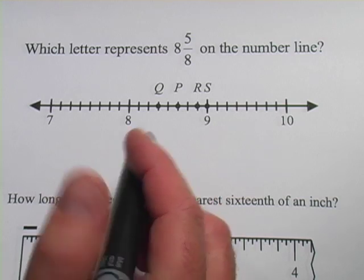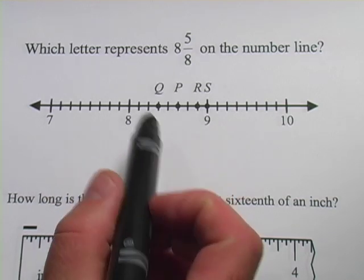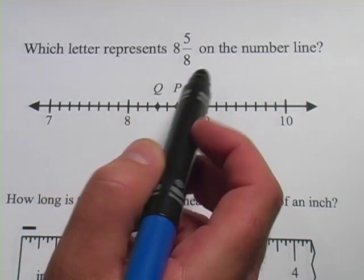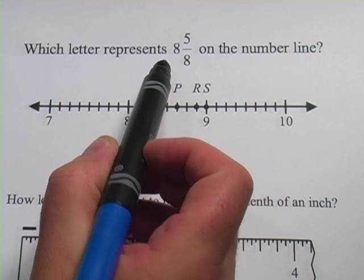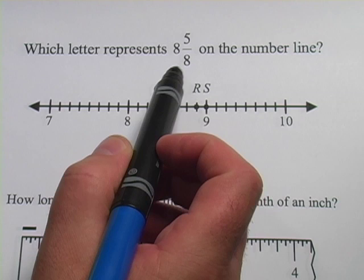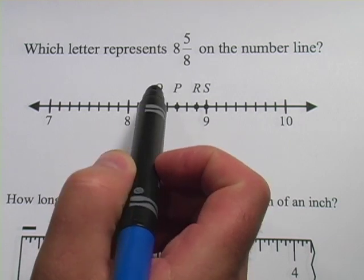In these problems, we're dealing with finding where mixed numbers are on a number line and also dealing with rulers, which is a pretty similar kind of problem. First of all, just as a reminder, a mixed number has this integer or whole number part and then a fraction part together. So this is 8 and 5/8. That's a mixed number.